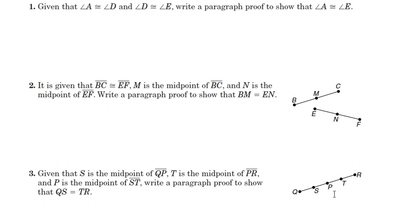Then TR is equal to one-half QP by substitution, and QS is equal to TR by the transitive property.